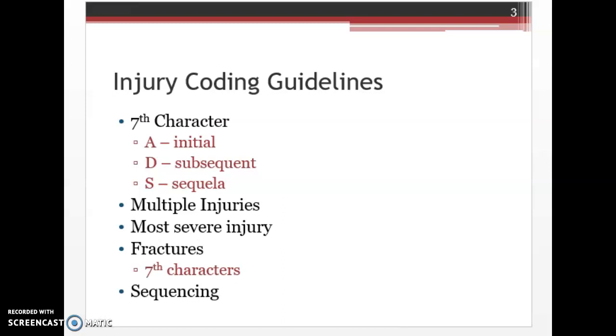D is subsequent encounter, and it's used for encounters after the patient has completed active treatment of the condition and is receiving routine care for the condition during healing or during the recovery phase. When the 7th character indicates subsequent care, we do not use a Z code for aftercare of injury as well.